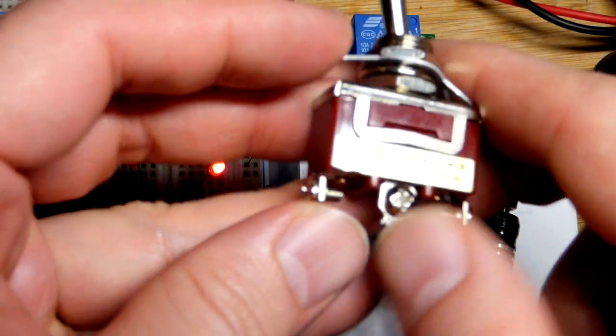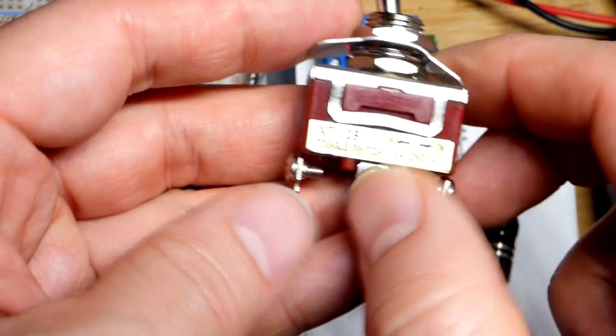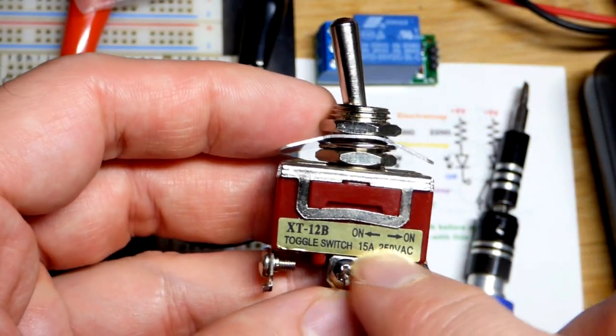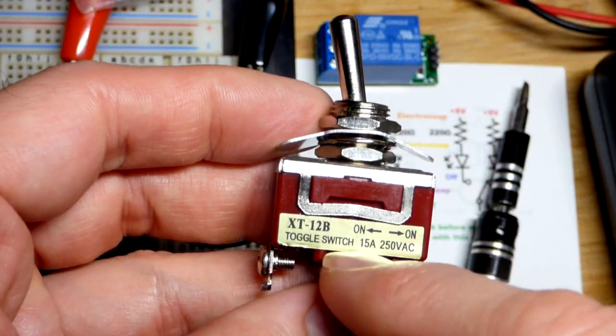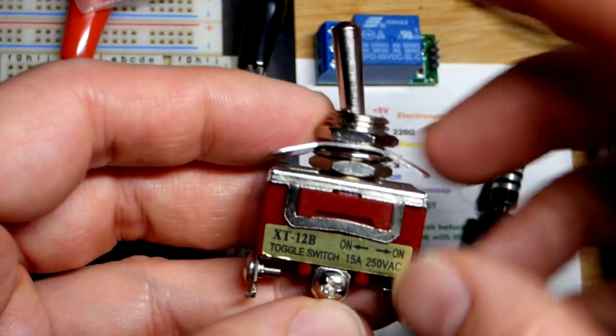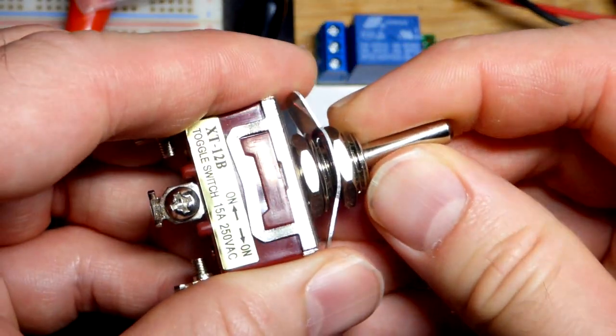So this should be the common right there. Although this one doesn't say common on it, but right now due to how we have that indication, I haven't used this in a long time. It looks like it's making a connection between those two right now. If I get it like halfway it will probably be disconnected. But this one doesn't want to stay halfway,